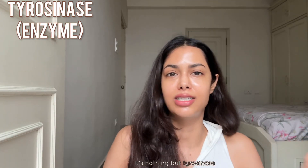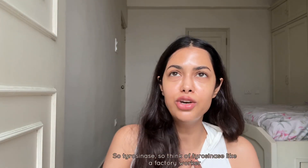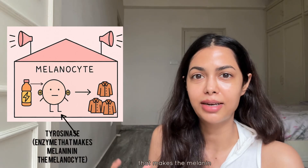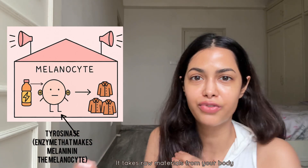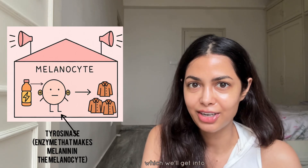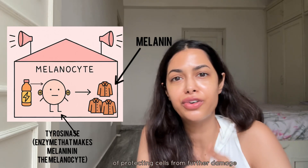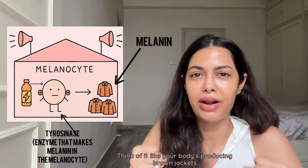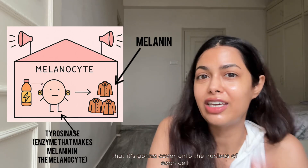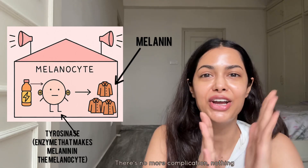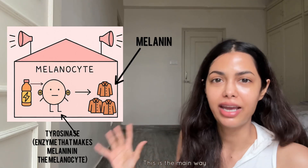So how does melanin actually get produced? The most important word of this entire video is tyrosinase. Tyrosinase is an enzyme — think of it like a factory worker. I'll put a diagram here for you. This guy is the one that makes the melanin. It takes raw materials from your body and makes melanin. Melanin is actually your body's own way of protecting cells from further damage — think of it like your body producing brown jackets that cover the nucleus of each cell to protect it from further damage. That's all you need to know. This is the main way that melanin is produced.